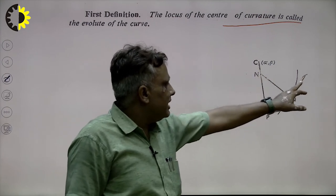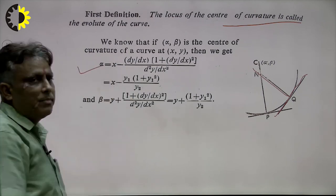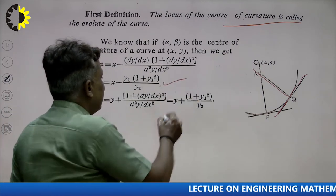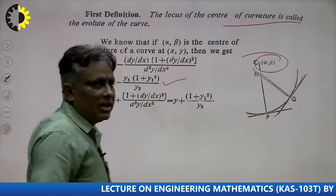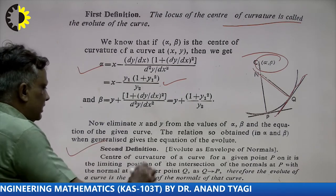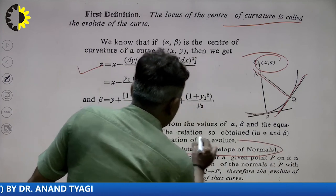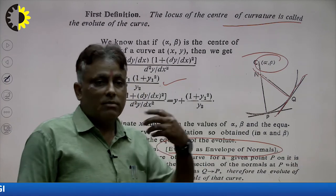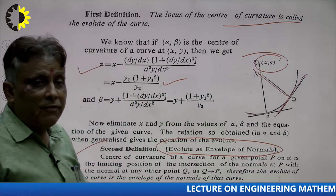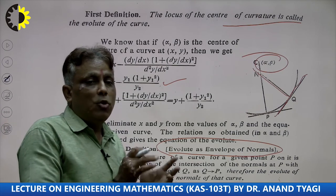We draw a perpendicular to the curve; this is the tangent, and this will be the normal of the curve. The coordinates of the center of curvature are α and β, where α = x − (dy/dx)(1 + (dy/dx)²) / (d²y/dx²), and β is similarly defined. So α and β are the coordinates of the center of curvature. There is another very important definition: the evolute of a curve is the envelope of the normals of that curve.